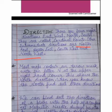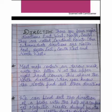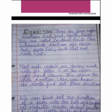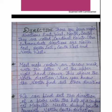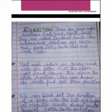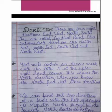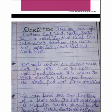Most maps contain an arrow mark with the letter N at the upper right-hand corner. This shows the north direction. When you know the north, you can find out the other directions.